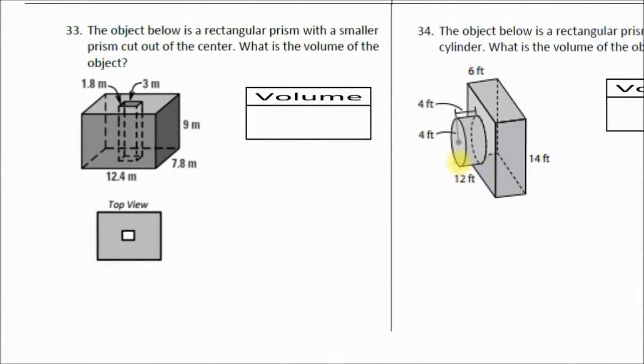Question number 33 on the Unit 10 Test Review 2 worksheet. The object below is a rectangular prism with a smaller prism cut out of the center. What is the volume of the object?